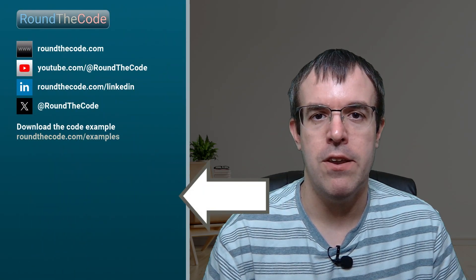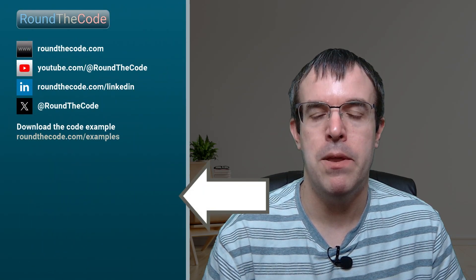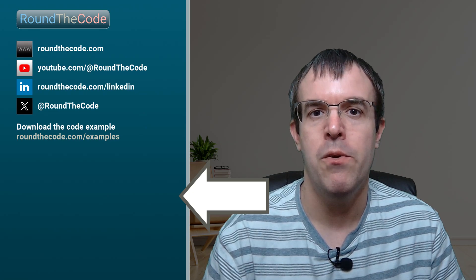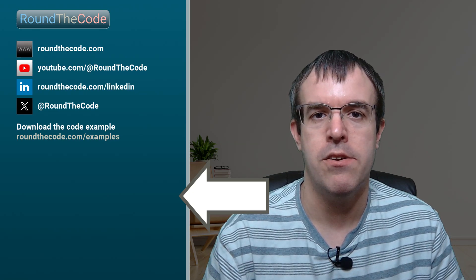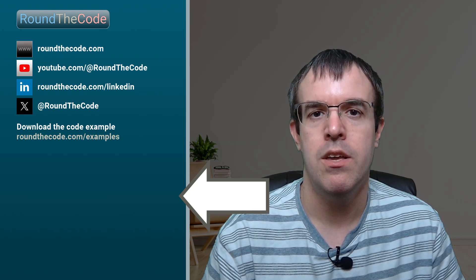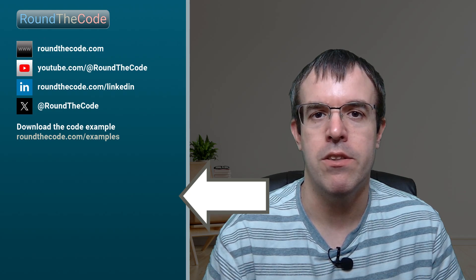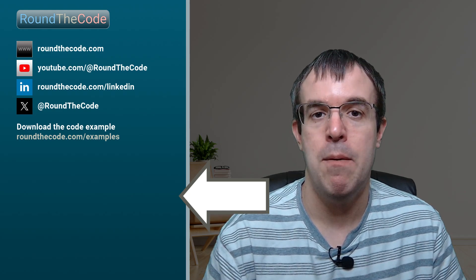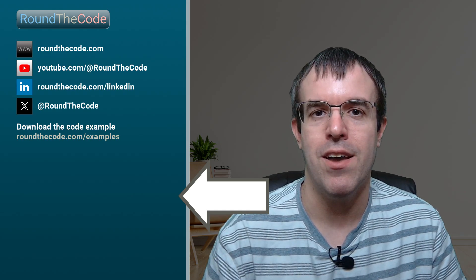You can watch this video next to see what else I learned about minimal APIs. To download the code example for this tutorial, you can go to roundthecode.com/examples — there's also a link in the YouTube video description. Leave any comments you have about authentication, and I'll see you on the next video.